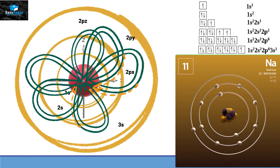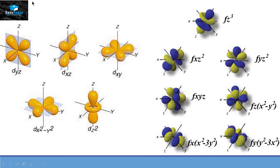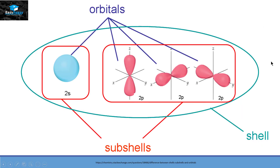With bigger atoms we move on to the D and F subshells. The D subshell has five different types of orbitals, each accommodating two electrons — so D accommodates 10 electrons in total. The F subshell has seven different types of orbitals, each accommodating two electrons — so F accommodates 14 electrons in total. To summarize: within a shell we have subshells S, P, D and F. S has 1 orbital, P has 3, D has 5 and F has 7. Each orbital accommodates two electrons moving in opposite directions.